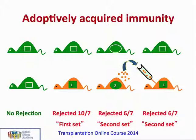In his now famous experiment, he took skin grafts between two genetically different strains of mice. When the two mice were from the same strain, there was no rejection of the skin graft. However, if a skin graft from one type of mouse was put onto a second type of mouse, then the graft was rejected within 10 days. If the experiment was repeated with a second graft, then the skin graft was rejected in only six days, in what he termed a second set rejection process.